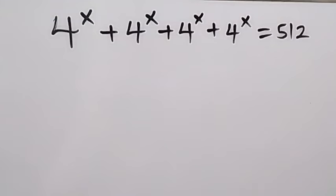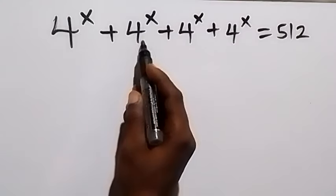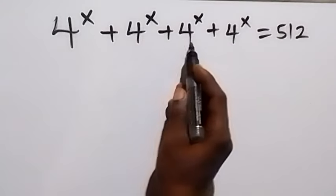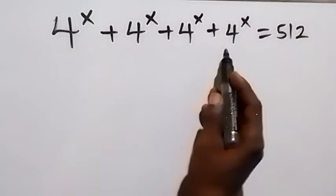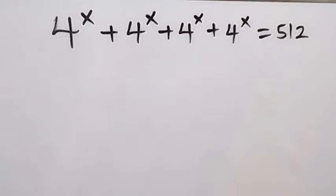Hello, you are welcome. How to solve this problem? 4 to the power x plus 4 to the power x plus 4 to the power x plus 4 to the power x equals 512.